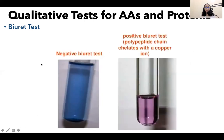For the results: if you have a negative Biuret test, you will just observe a blue color because your copper-2 ions in solution didn't form a complex — there are no peptide bonds in your sample. For a positive Biuret test, you will observe a purple color, meaning that you have a polypeptide chain in your sample forming a complex with the copper-2 ion.